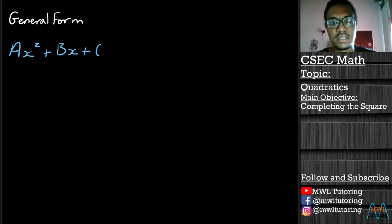Completing the square is the process of changing the way our quadratic equation looks. And if you watch my earlier videos on quadratics, you'd be aware that there is this form of the quadratic equation called the general form. It looks like Ax² + Bx + C.